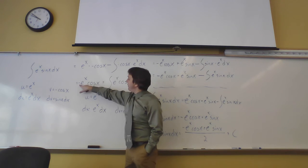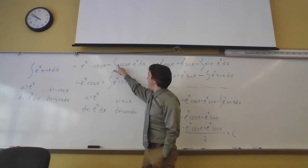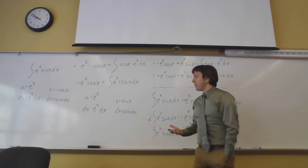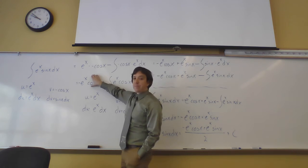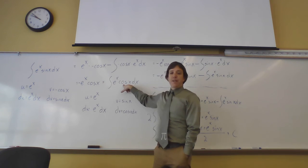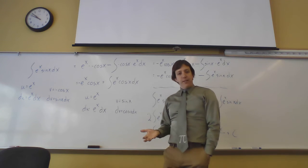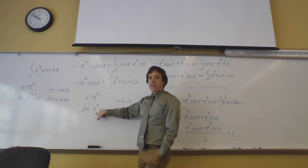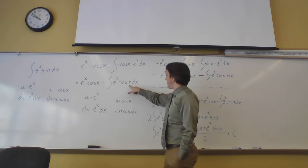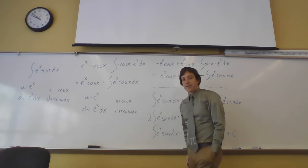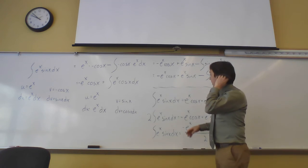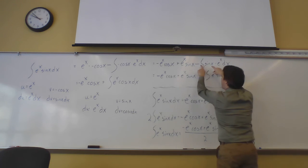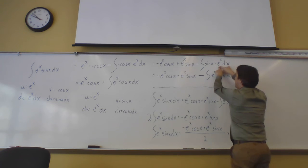Cleaning that up, I brought the negative out front: −eˣ·cos(x) plus the integral of eˣ·cos(x) dx. This looks very similar to where we started — the only change in the integral is sine is now cosine. Running integration by parts a second time: u = eˣ, du = eˣ dx, dv = cos(x) dx, v = sin(x). Plugging in again: keeping the −eˣ·cos(x), then u·v = eˣ·sin(x), minus the integral of sin(x)·eˣ dx.